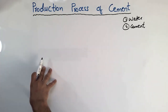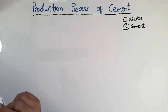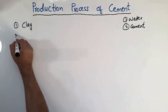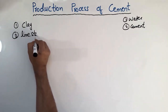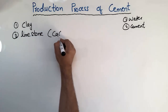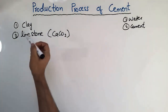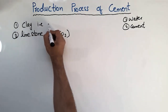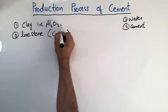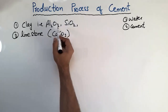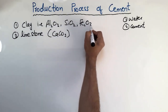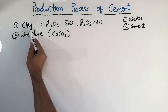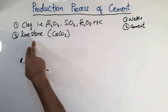I will explain the production process of cement in a very simple way. The two basic materials used for the production of cement are clay and limestone. Limestone is CaCO3, known as calcium carbonate. Clay has a chemical composition of aluminum oxide (Al2O3), silica oxide, and iron oxide — these oxides are mostly found in clay.